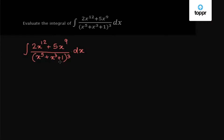Now, we pause a bit and try to find out if there are some common factors in the numerator and the denominator that might get cancelled. We can see that we can take x to the power 5 out from the cube such that it becomes x to the power 15 common in the denominator.